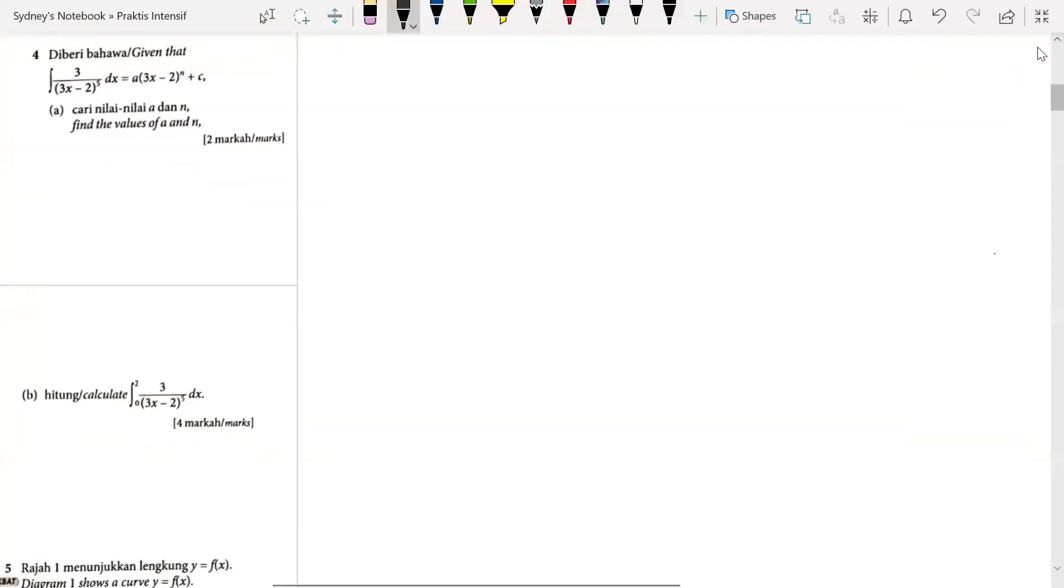Hi, everyone. This is Practice Summative, Paper 1, question number 4. We are given that the integration of 3 over (3x minus 2) raised to the power 5 with respect to x is equivalent to a times (3x minus 2) raised to the power n plus c. We have to find the value of a and n.